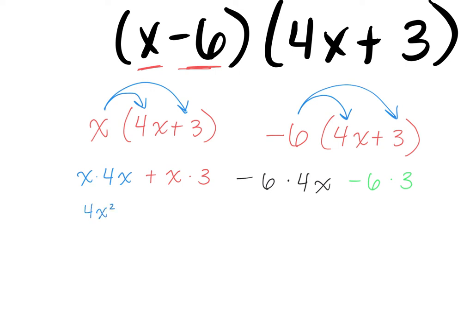4x squared. Why x squared? Very good — the x's are being multiplied so we add their exponents. Serena, what's the red term going to become? 3x. Excellent. And Serena, one more — what about the black term? Negative 24x. Excellent.